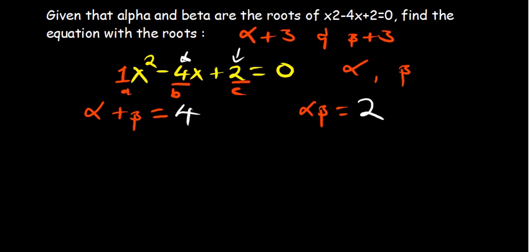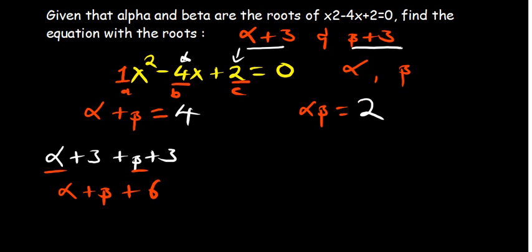Now looking at the equation they want us to find, they want us to use alpha plus 3 and beta plus 3 as the roots of the new equation. We handle it the same way. We need to add them first: alpha plus 3 plus beta plus 3. When we simplify, we collect like terms: alpha plus beta plus 6.